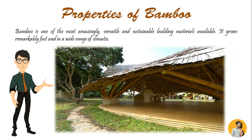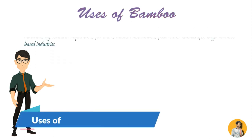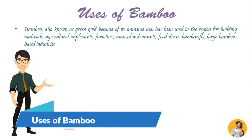Its physical characteristics are ideal for creating light but strong structures. The relatively strong life span of bamboo construction and the association of properties created by the widespread use of this material made it very cheap compared to the cost of other materials. Even today, bamboo is considered to be a poor man's building material. Bamboo is also known as green gold because of its immense use in a region for building materials.